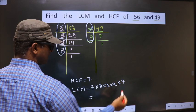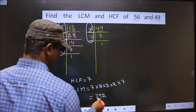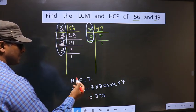So, now you multiply all this. You get 392. So, this is the LCM and this is the HCF.